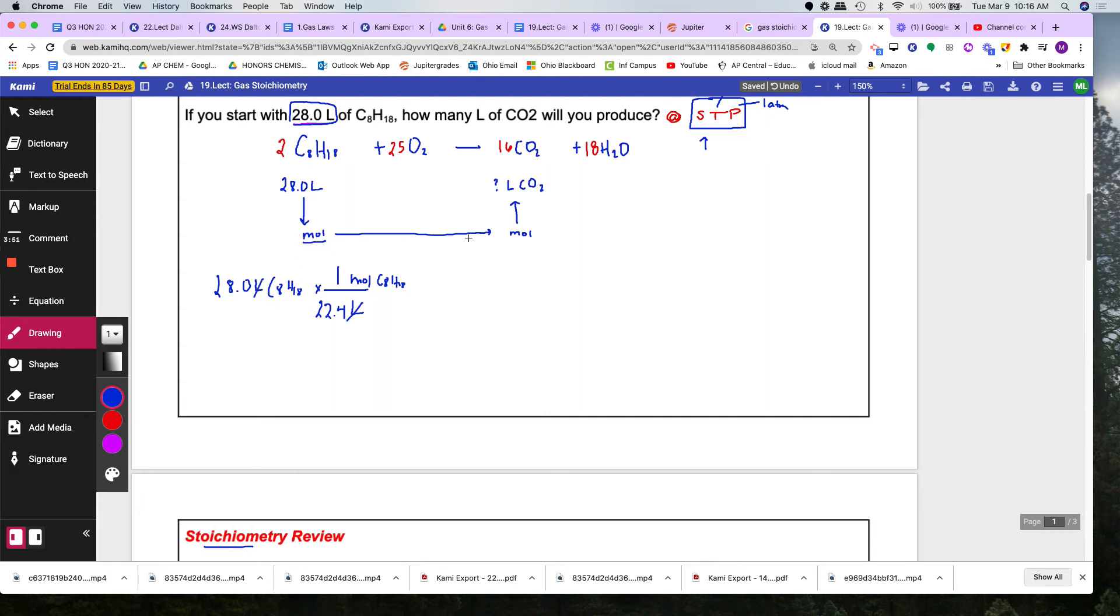Now you're at moles right here, you can go to moles of the other substance. Mole C8H18 to mole of CO2. Which is 16 over here, and 2 over here. Now if they want moles, you stop.